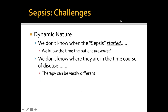Why is it so difficult to treat sepsis? Unlike myocardial infarction, where you know the time of onset because of chest pain, we don't know when sepsis started. We know when the patient presented to us, but the actual onset of sepsis is unclear. We don't know where in the course of that dynamic disease they've presented — early or late. That's why it makes it so difficult to treat these patients, because the therapies are actually diametrically opposite.